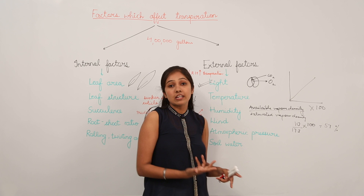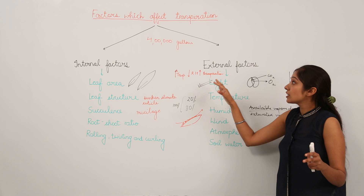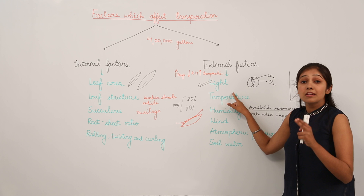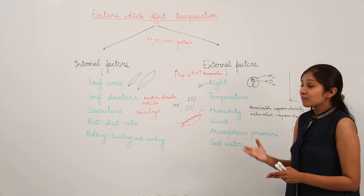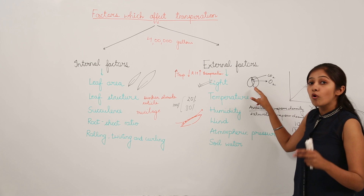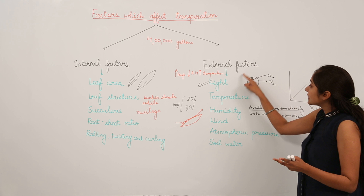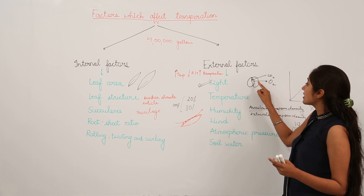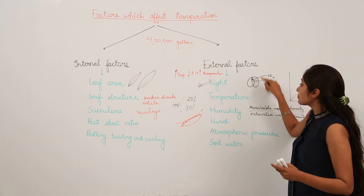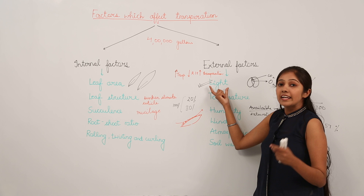Now let's recall the external factors that influence the rate of transpiration. Light is one of the most important factors. If the intensity of light is more, the rate of photosynthesis increases, meaning stomata need to be open for gas exchange — oxygen is given out and CO₂ is taken in through the stomata. So when light intensity is higher, the rate of transpiration is also higher.